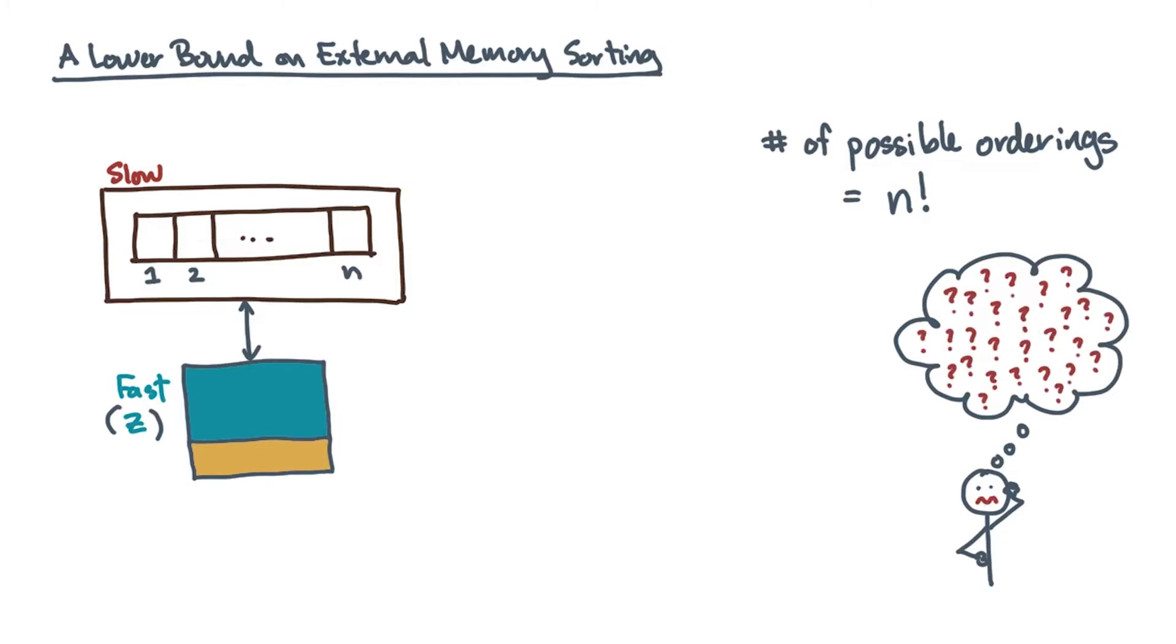Suppose you read some data from slow memory. From this data, you learn something which reduces the number of possible orderings. Now, let's be a teeny bit more precise.